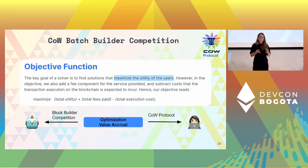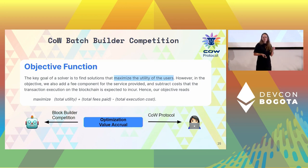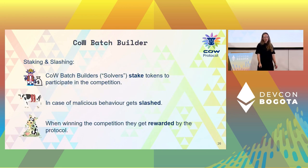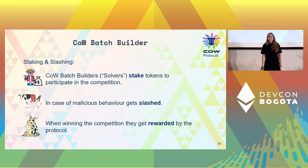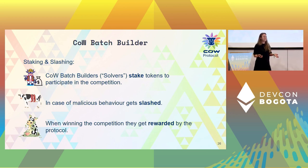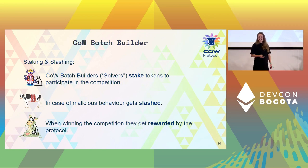This is enforced by the objective function: the batch builder that maximizes utility for users wins the competition. To keep cow batch builders honest, they participate by staking on the protocol, and in case of malicious behavior they are slashed. If they win the competition and execute the trade on-chain, they are rewarded by the protocol.